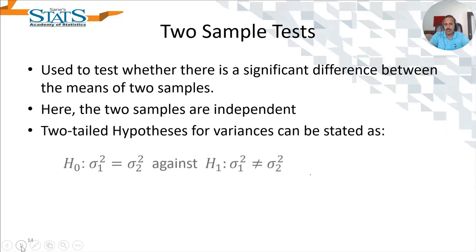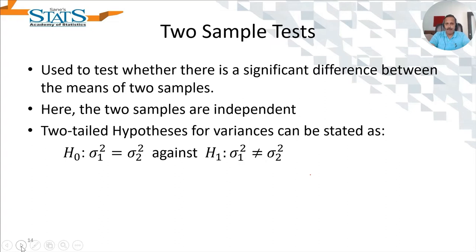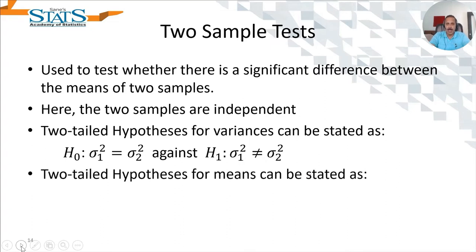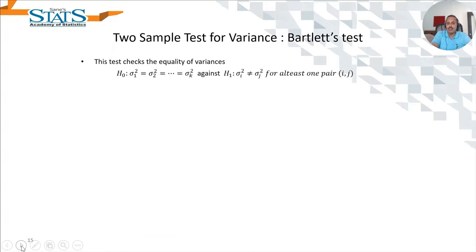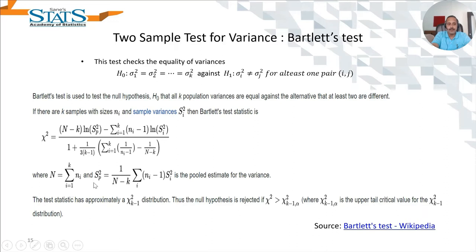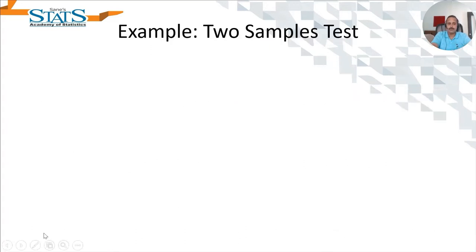We have two hypothesis tests to learn in this video: one for comparing variances and another for comparing means. For comparing variances there are various options, one of them being the F-test, Levene's test, and Bartlett's test. Here I am presenting the formula of Bartlett's test, and we will also see Python options related to it. Note that the null hypothesis in Bartlett's test is not just for two variances — this test is meant for testing multiple populations.